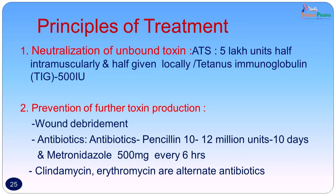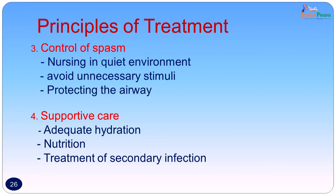If the patient has an allergy to penicillin, alternative antibiotics such as clindamycin and erythromycin can be considered. The third principle of treatment is to control the spasm. Every time the patient goes into a muscle spasm it is very painful and dangerous, because if respiratory and diaphragmatic muscles go into spasm they may result in respiratory failure. The patient should be nursed in a quiet environment, avoiding unnecessary stimuli. The airway should be protected and supportive care — adequate hydration with IV fluids, nutrition, and treatment of any secondary bacterial infection — should be provided.